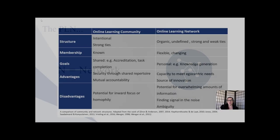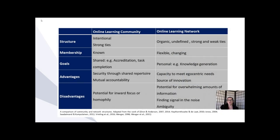I've put together a table which compares learning communities and learning networks, and whether or not they're online or offline, these features are what differentiate each social structure. A learning community has an intentional structure and is made with a series of strong ties, which basically means that generally in a community people know each other, the membership is known, and there's a high level of trust and reciprocity within the relationships.